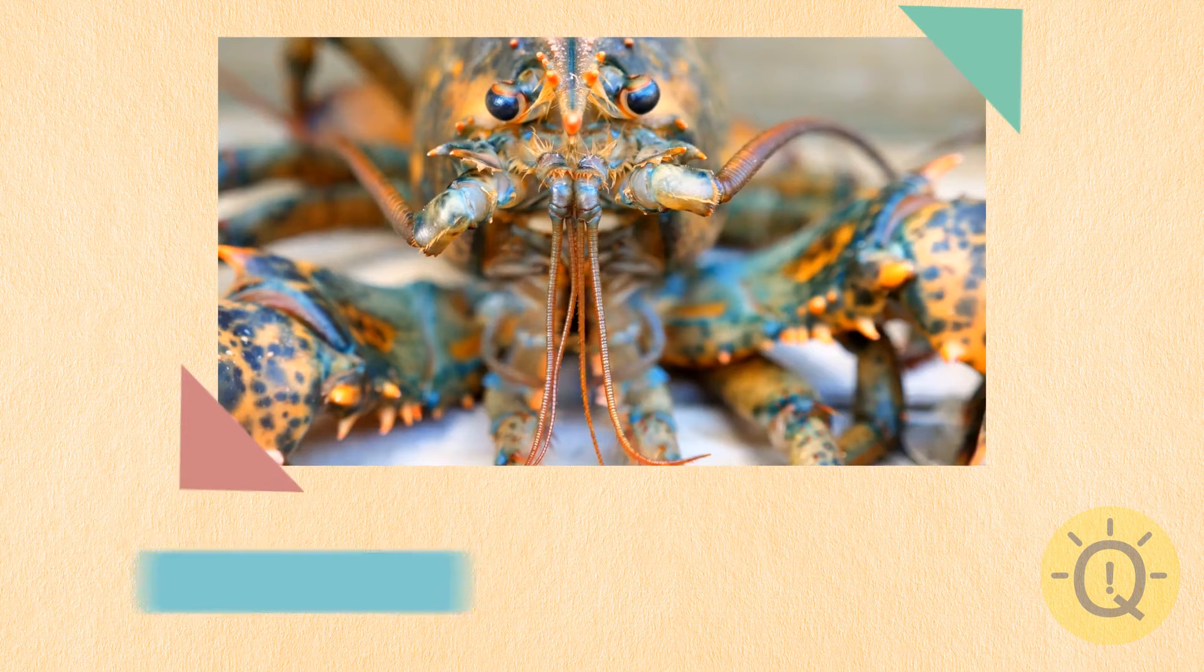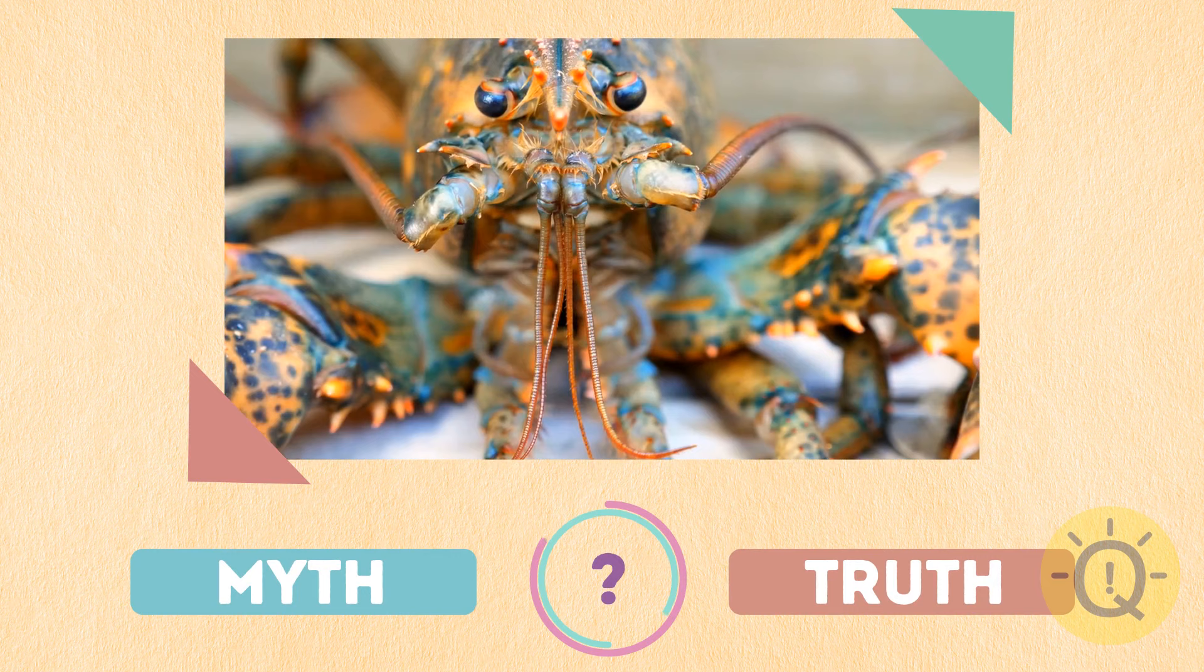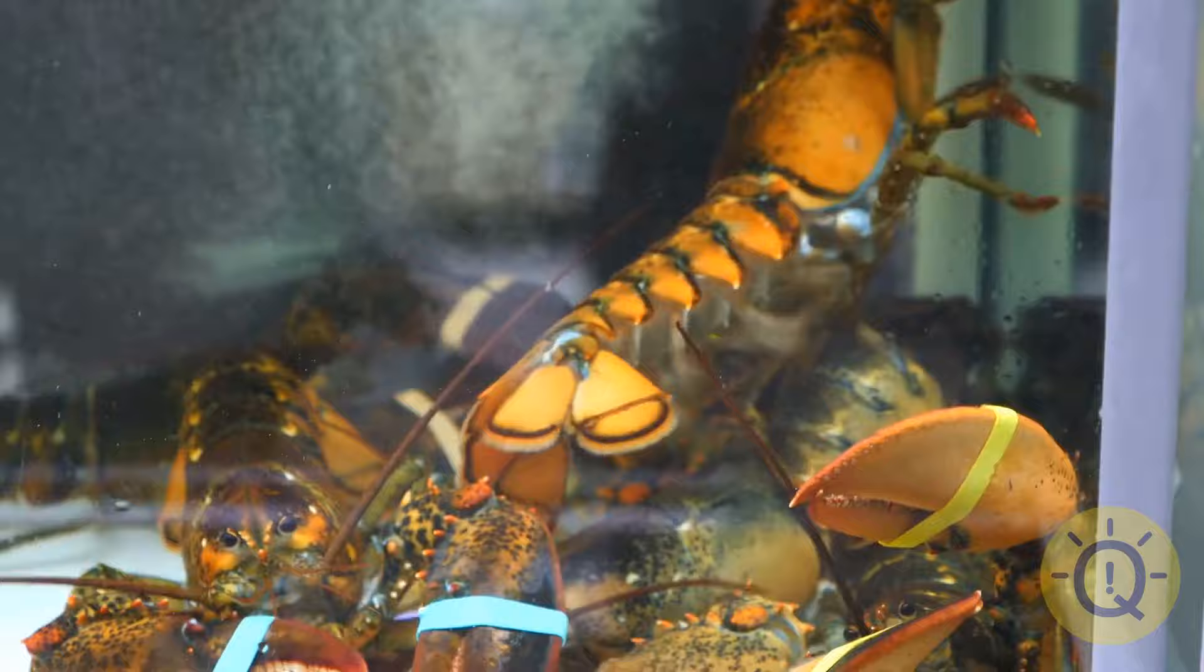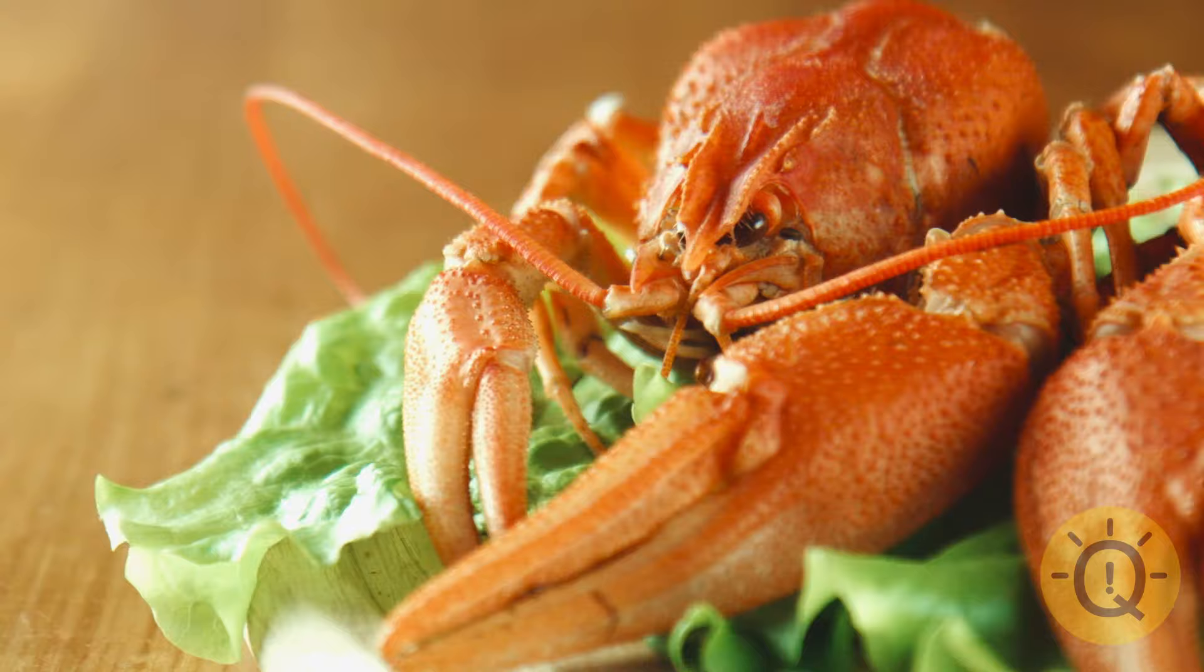Lobsters are monogamous and stay together for a lifetime. True or false, what do you say? Well, sorry to spoil the romance, but it's just a myth made popular by a famous TV show. In real life, lobsters aren't monogamous at all. Dominant male lobsters mate with several females. And then, one by one, they vanish, only to reappear on a restaurant table with melted butter.